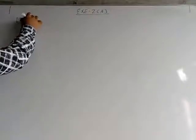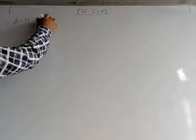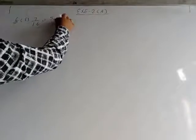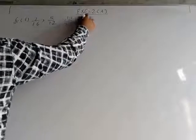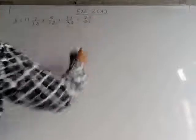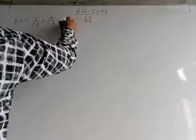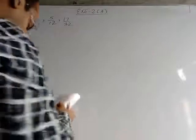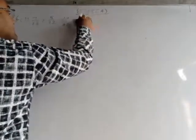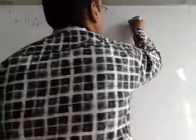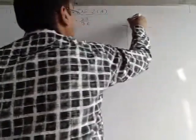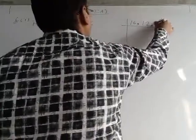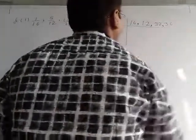Question number 6, first part. The fractions given are: 7/16, 5/12, 17/32, and 23/36. We have to find the LCM of the denominators first. Here it is 17/32 and the next is 23/36. First of all we will find the LCM of 16, 12, 32, and 36.